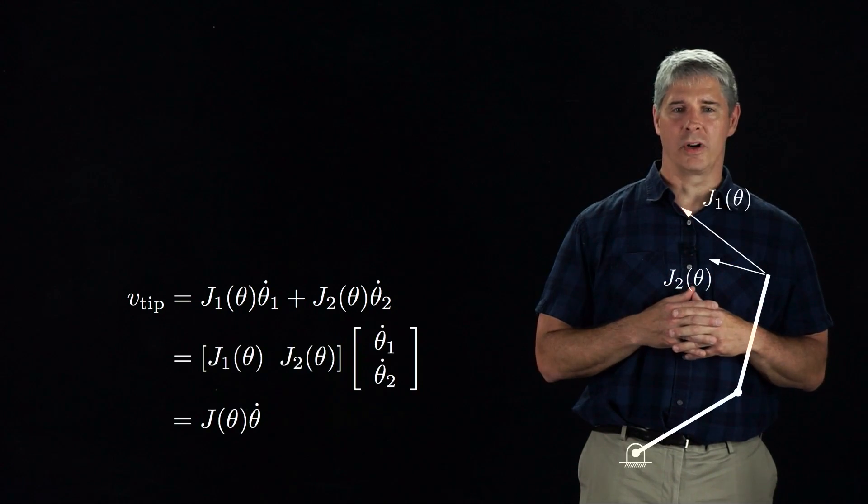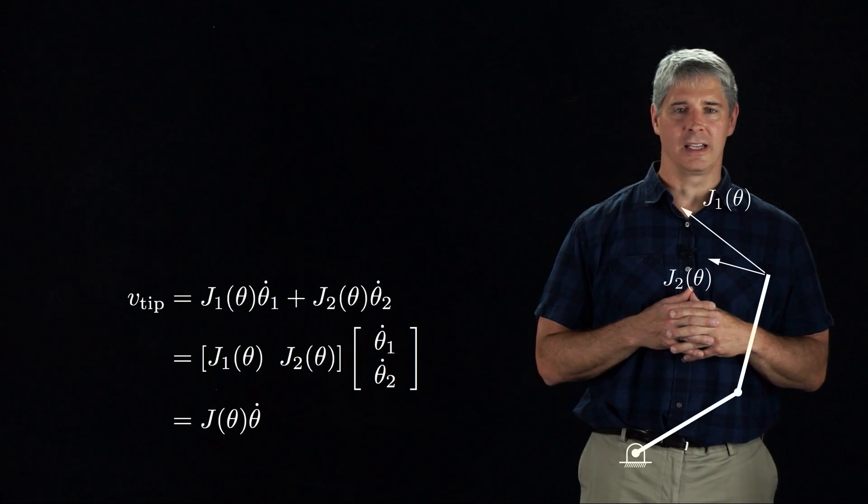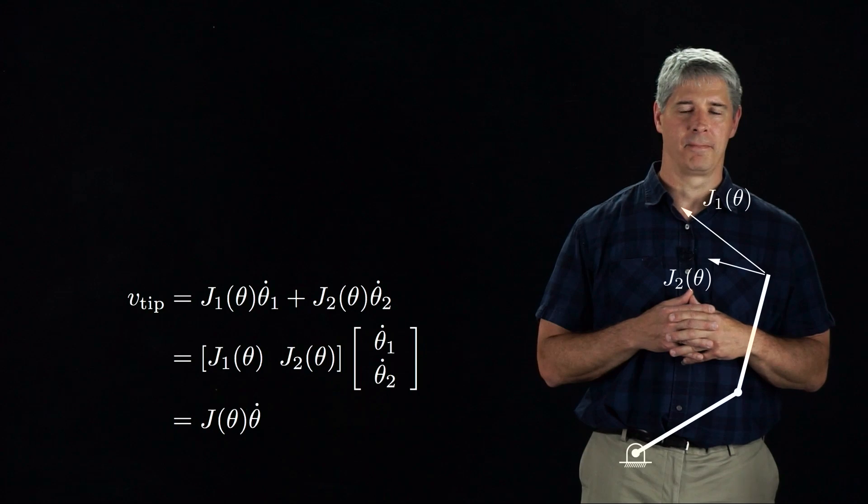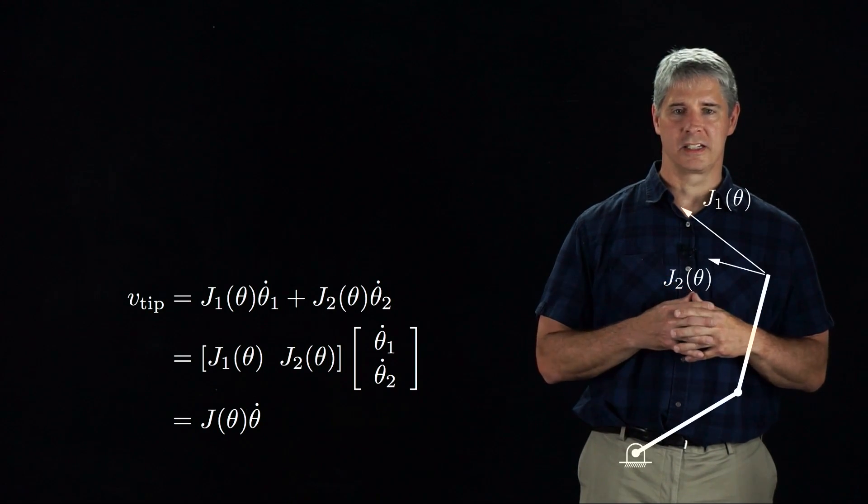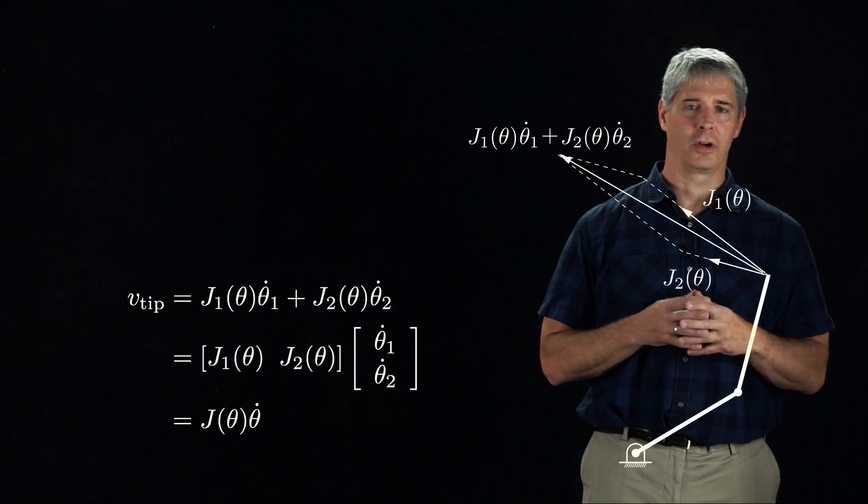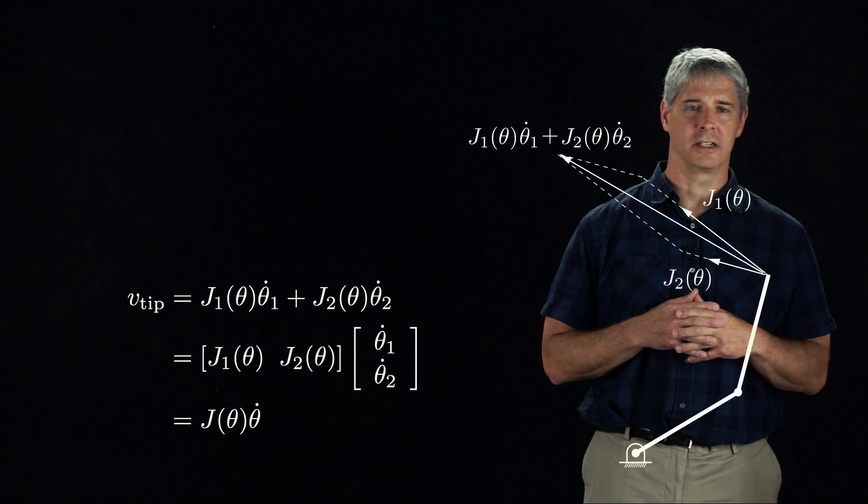We can put the J1 and J2 vectors side by side to form the Jacobian matrix J. The end effector velocity is just a linear combination of J1 and J2 with coefficients equal to the joint velocities.